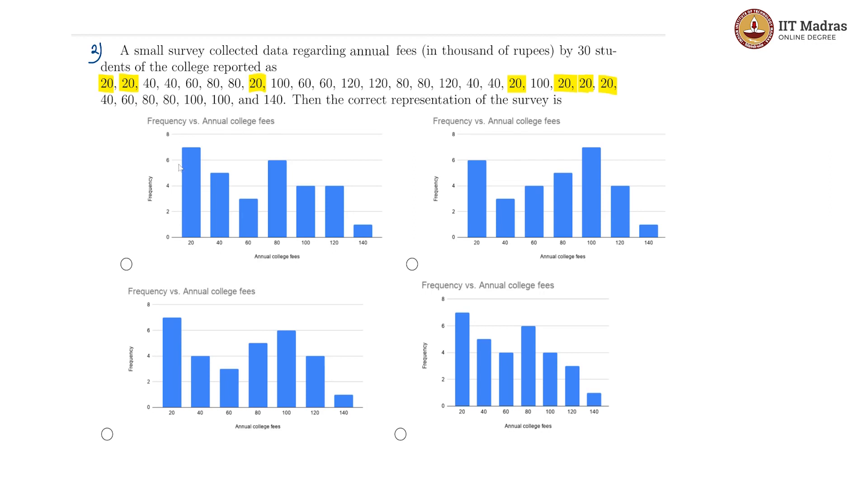So the only options which satisfy this, actually 3 options satisfy it. Option 2, this is definitely wrong, because here this is 6 which is wrong.